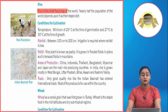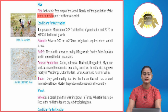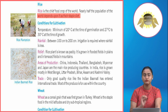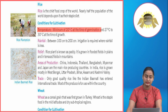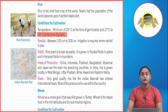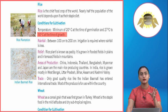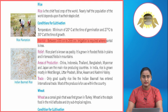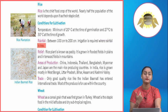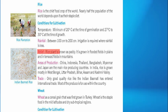Rice is the chief food crop of the world. Nearly half the population of the world depends upon it as their staple diet. Conditions for cultivation — Temperature: minimum of 20 degrees Celsius at the time of germination and 27 to 30 degrees Celsius at the time of growth. Rainfall: between 100 cm to 200 cm; irrigation is required where rainfall is less. Relief: The rice plant is known as paddy. It is grown in flooded fields in plains and in terraced fields in mountains.